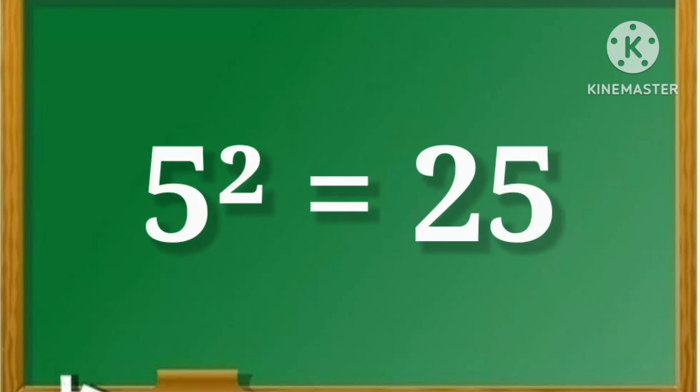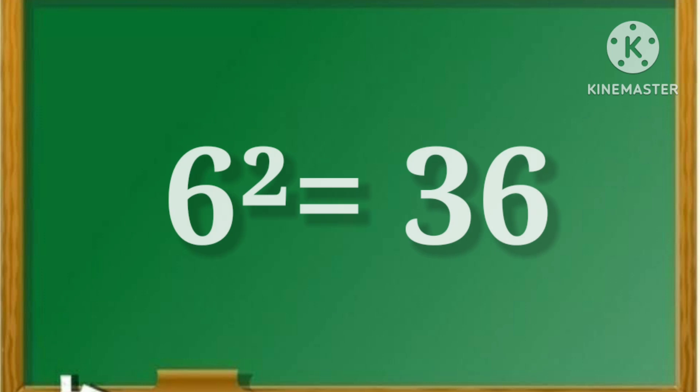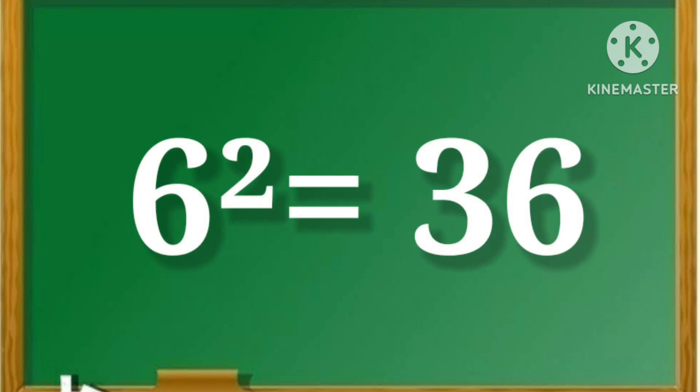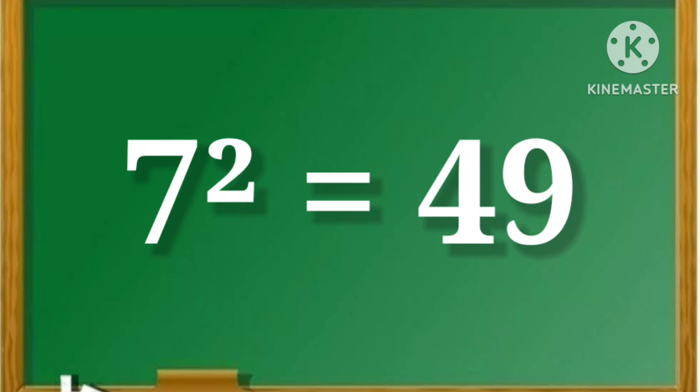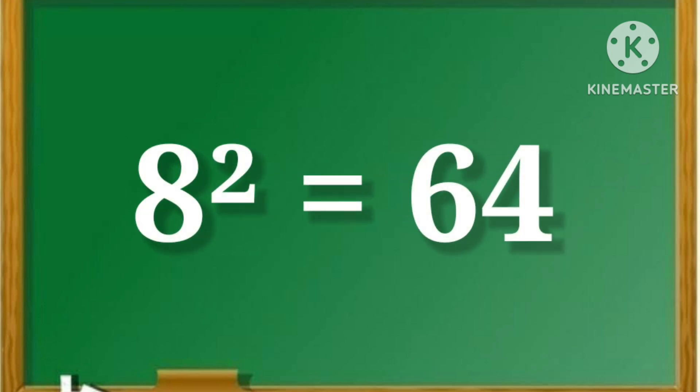5 square is equal to 25. 6 square is equal to 36. 7 square is equal to 49. 8 square is equal to 64.